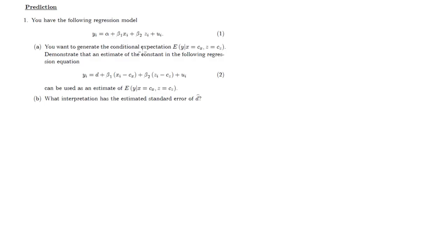The question is, you want to generate the conditional expectation. So this is important here. And that means that we have two values here on which we want to condition the expectation cx and cz. So that means we are concerned about a particular observation where the x value takes the value cx, we could give it a number but I'll just leave it as a variable, and the value for the explanatory variable z takes a value of cz.